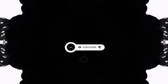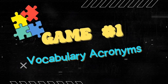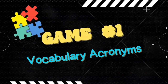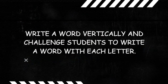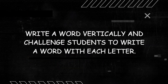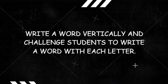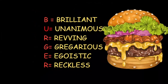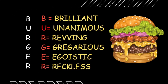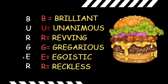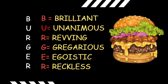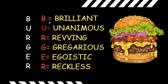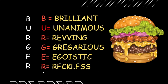Here is game number one: Vocabulary Acronyms. How to play this? Write a word vertically and challenge students to write a word with each letter. For example, you can select a very common word like 'burger,' write it vertically down, and then ask children to find some new words — some vivacious vocabulary — with each letter of 'burger.'